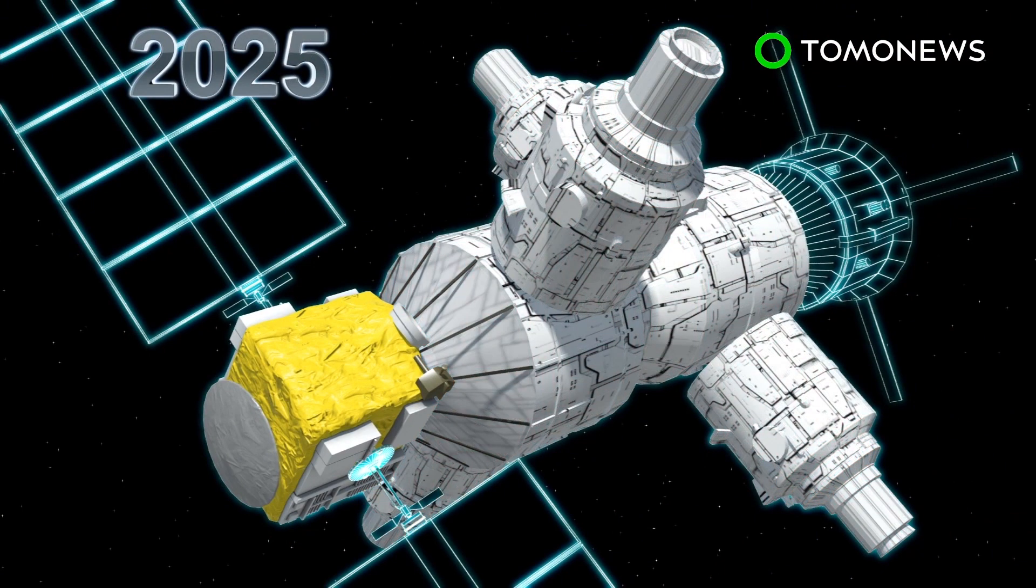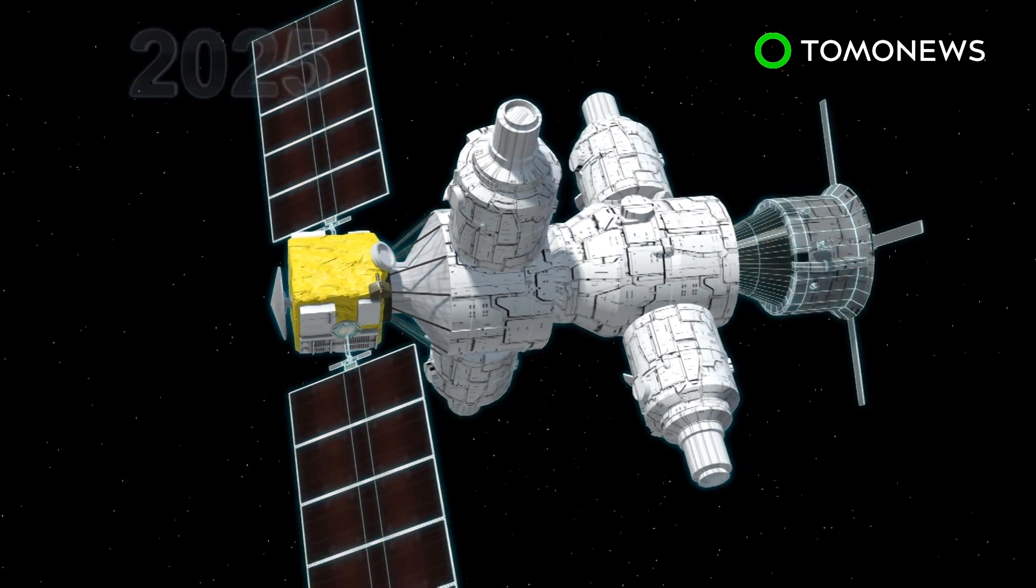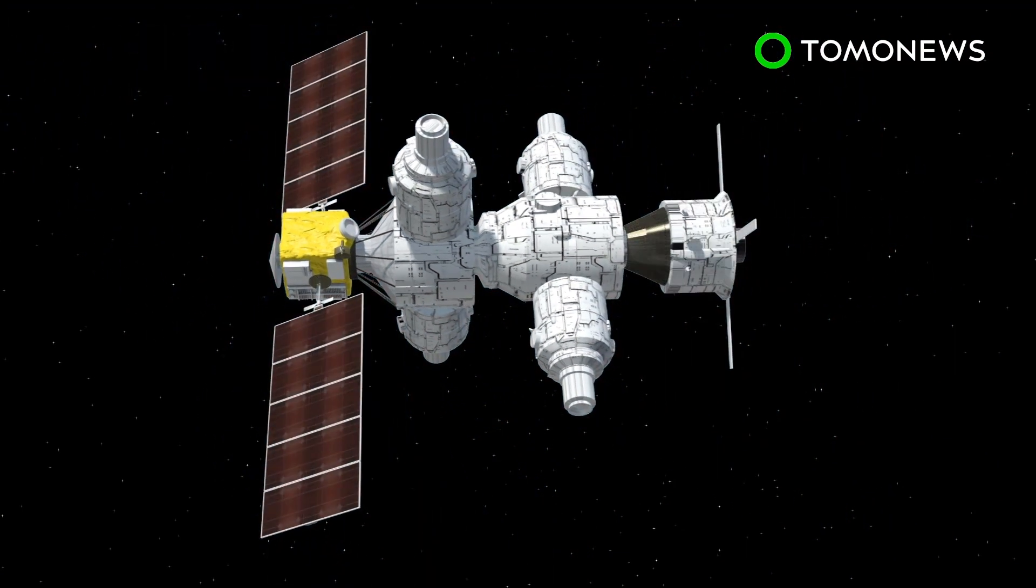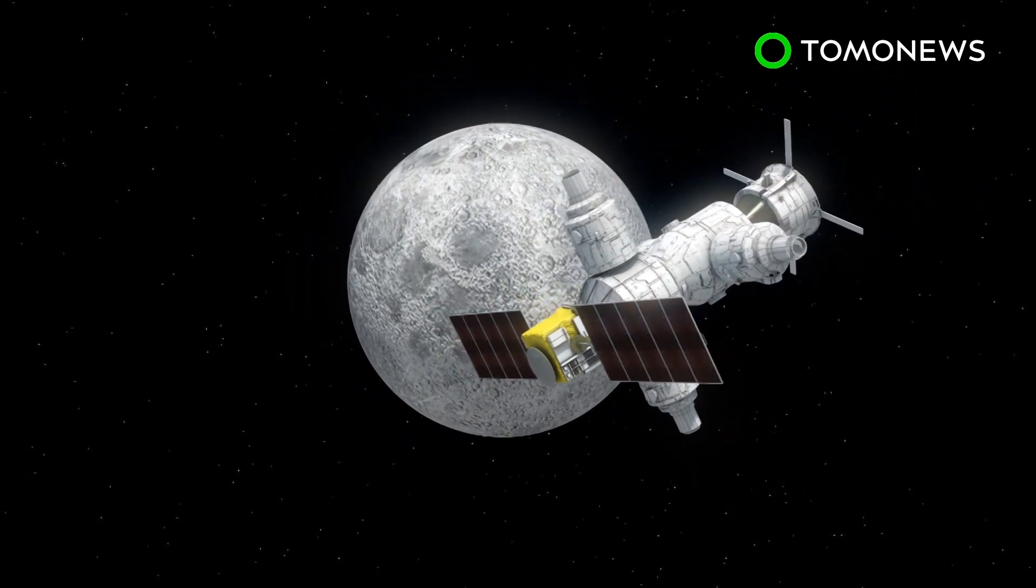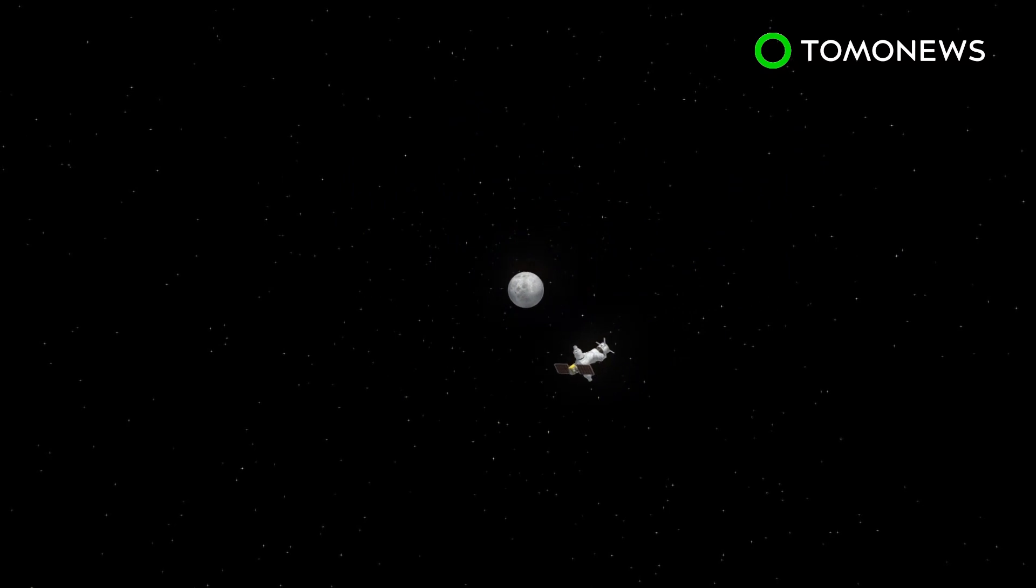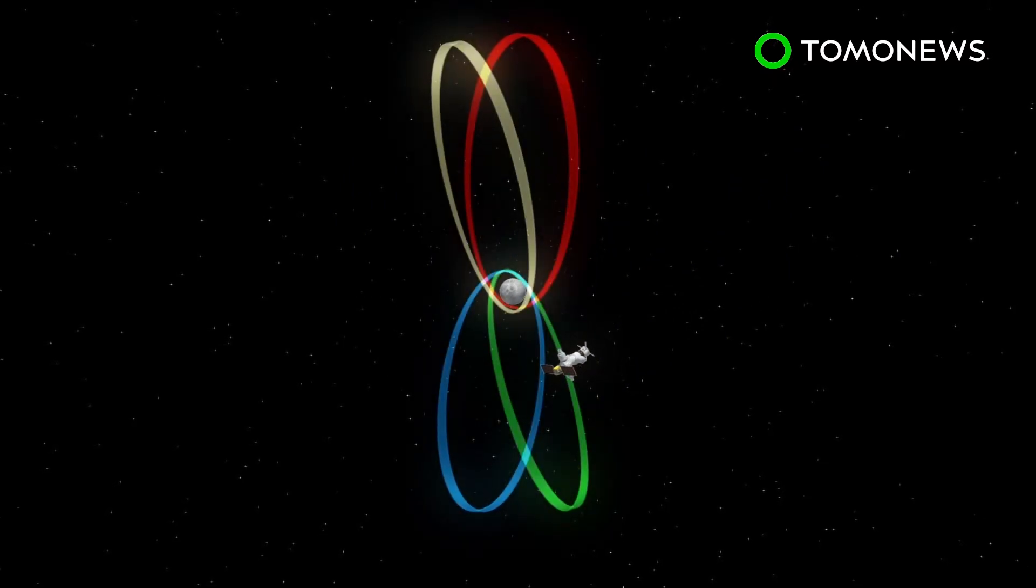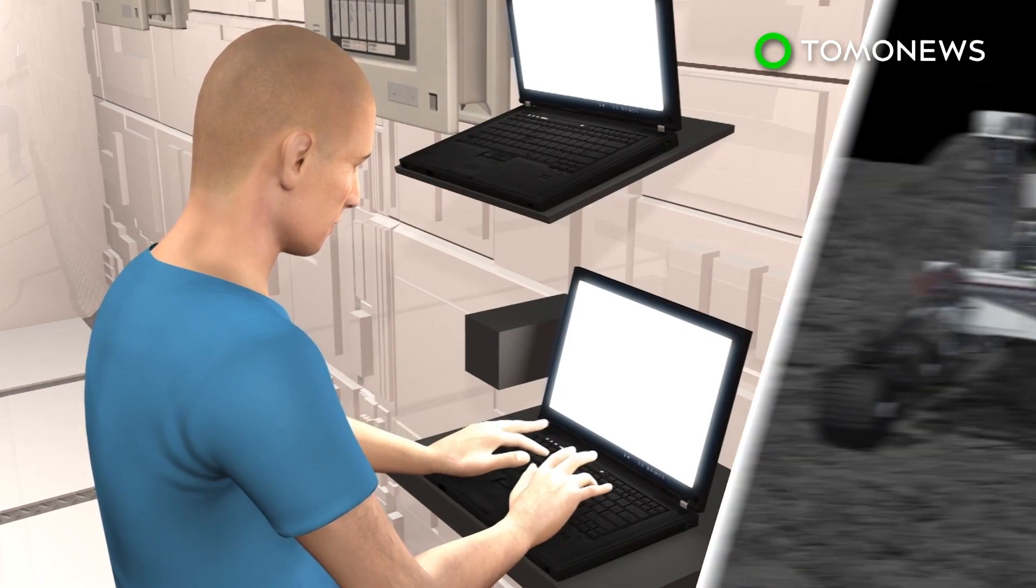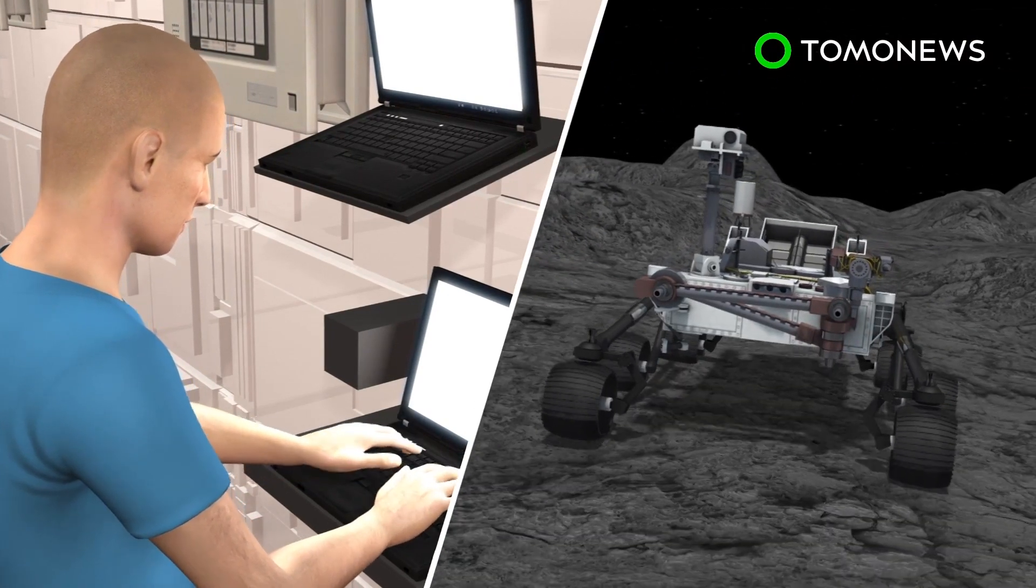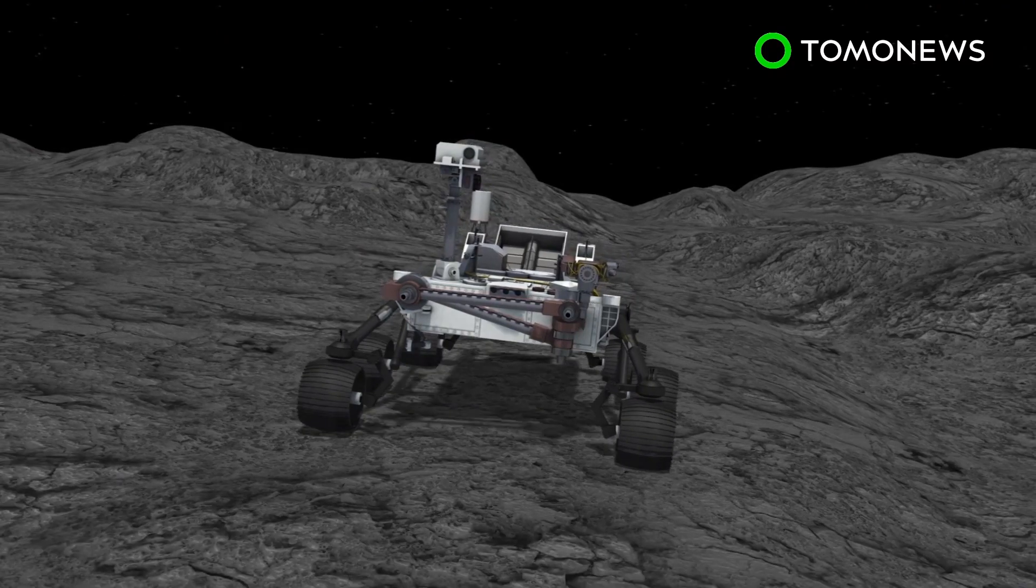Two additional launches by 2025 to add habitation, logistics and airlock functions would complete the station. The Gateway would be put in a near rectilinear halo orbit, an orbit in cislunar space that could be used as a staging area for future missions. The platform's position would let astronauts control telerobots on the Moon's surface that could be used to explore craters as well as carry out other experiments.